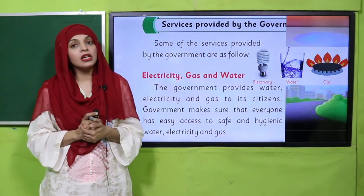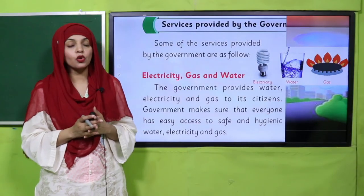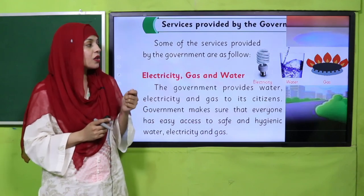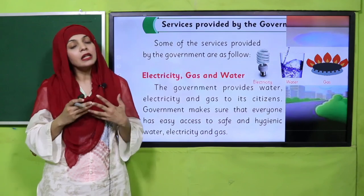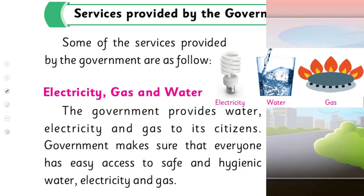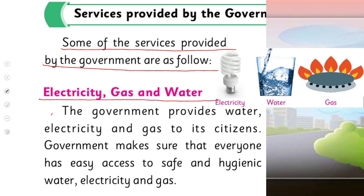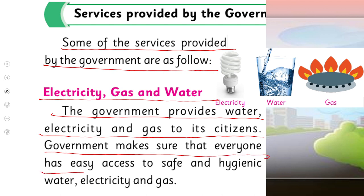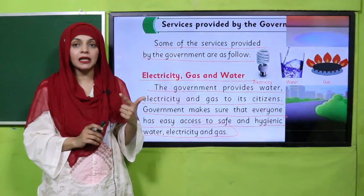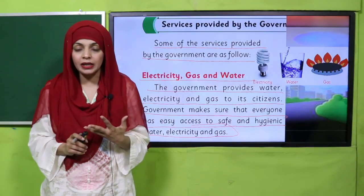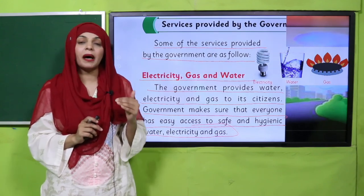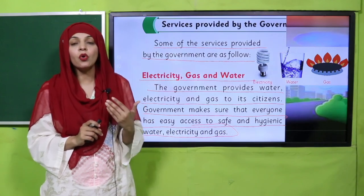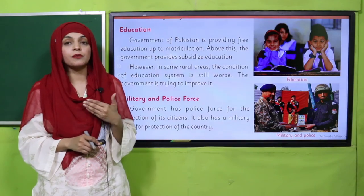Please open 'Services Provided by the Government' in your GK books. Here you can see the picture — electricity, water, and gas are some basic necessities provided by the government. Some of the services provided by the government are as follows: electricity, gas, and water. The government provides water, electricity, and gas to citizens and makes sure that everyone has easy access to safe and hygienic water, electricity, and gas. These basic necessities are provided to ensure that our daily life is easy.